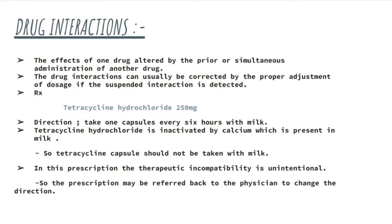Drug interactions could mean interactions between a drug and food taken by the patient, or between two drugs prescribed together. For example, tetracycline hydrochloride directions say to take one capsule every six hours with milk — but this is wrong. Tetracycline should not be taken with milk, because tetracycline is inactivated by the calcium present in milk. This is a therapeutic incompatibility.